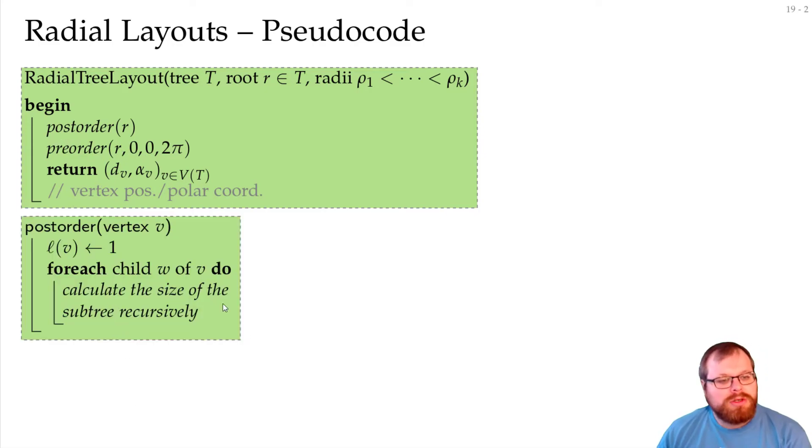First in the post-order we just find what is the size of every vertex. So we start in a vertex, we give it size one and then for each child we recursively calculate the size and add it. And if we want to be a bit more formal we recursively call post-order and now the size of v is the size of itself plus the size of this subtree. So this is the easy part, but the main work we do in this pre-order here.